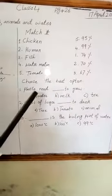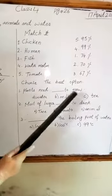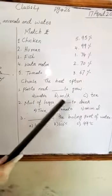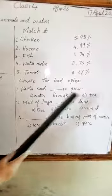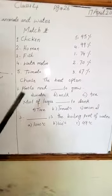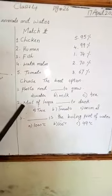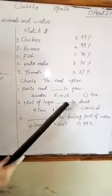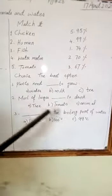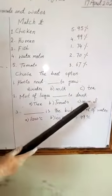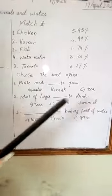Number 1: Plants need water to grow. Options: water, milk, tea — answer is water. Number 2: Most of the larger animals need water to drink. Options: tree, tomato, animal — right option is animal.